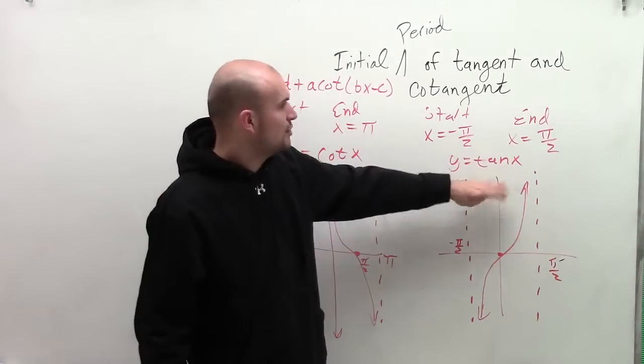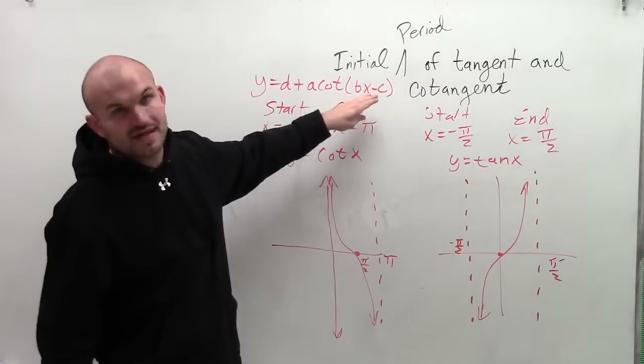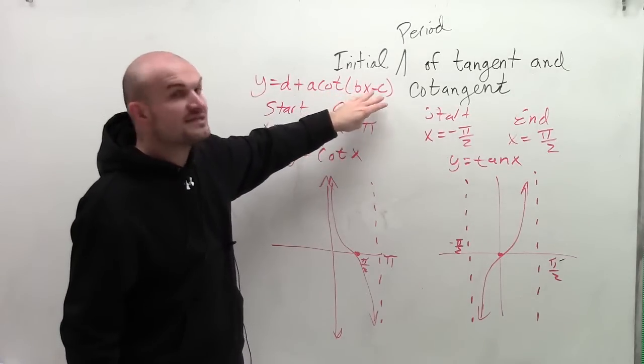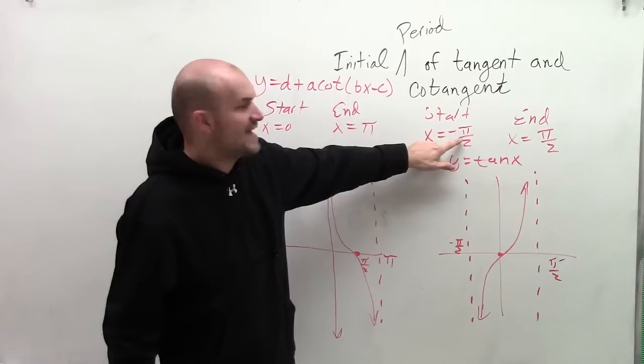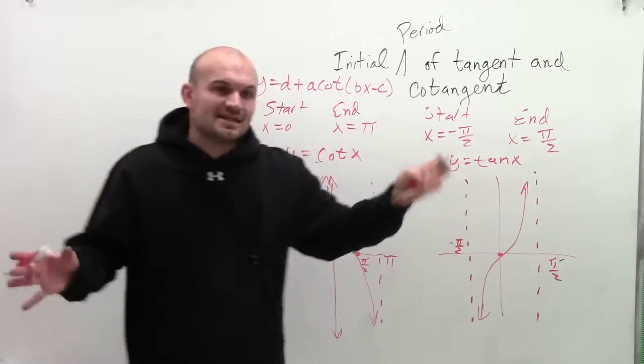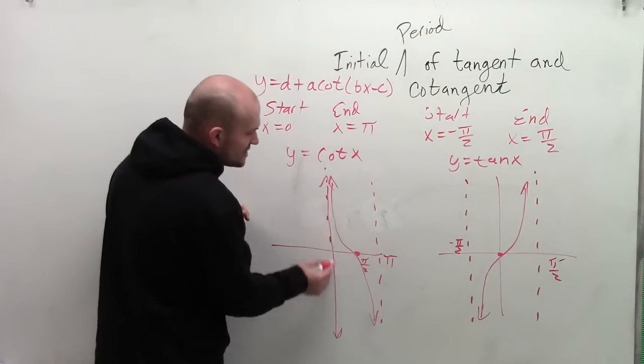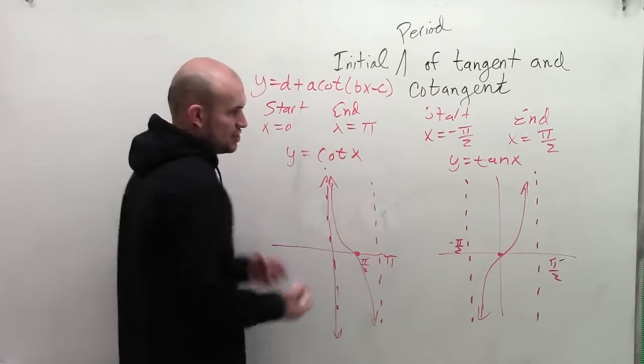The same thing with tangent. I can rewrite the same standard form, but just input tangent in there. And what you're going to do for any transformation, whatever's inside your function, you're going to set that equal to negative pi halves and pi halves. And that's just going to tell you where you're going to start. Where is your first asymptote and your second asymptote?